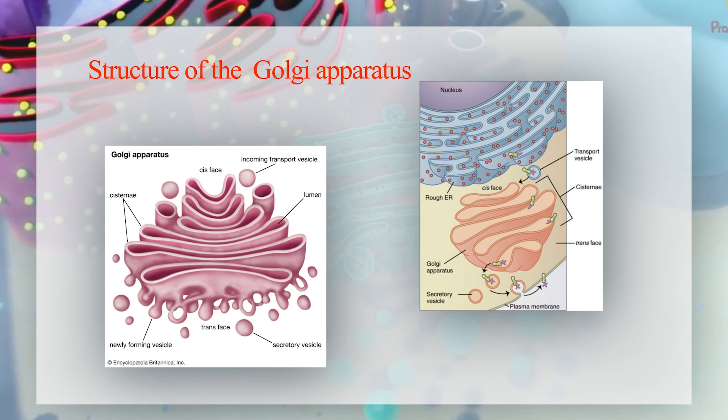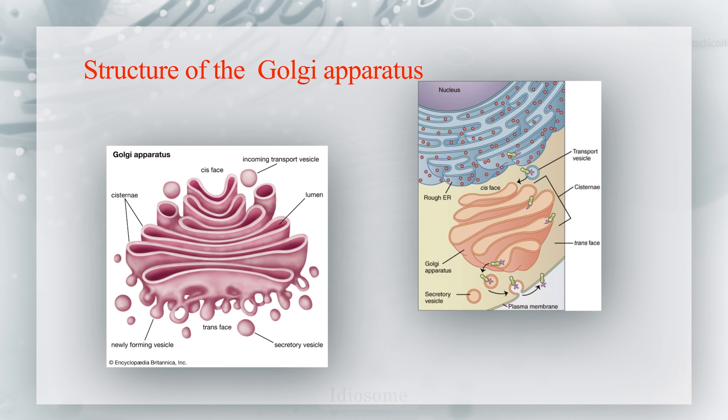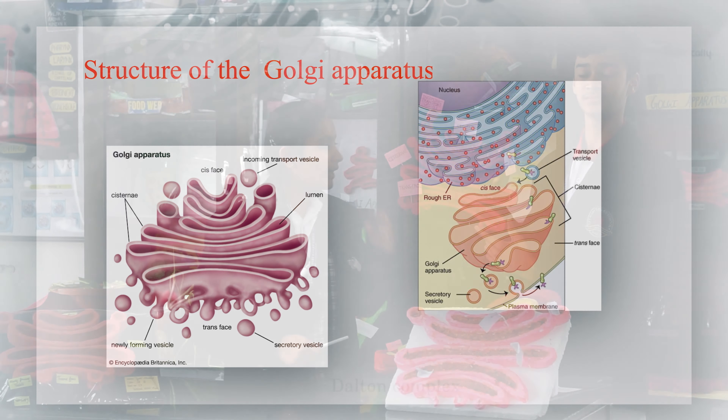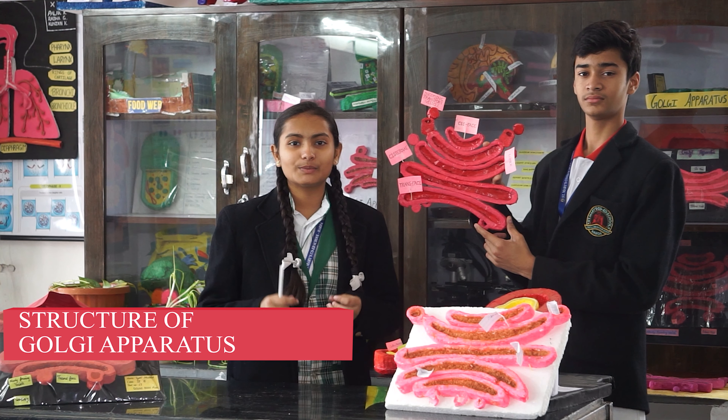It was discovered by Camillo Golgi in 1898. It is usually absent in prokaryotic cells and present in eukaryotic cells. It is located in the cytoplasm, right next to the endoplasmic reticulum and near the cell nucleus.